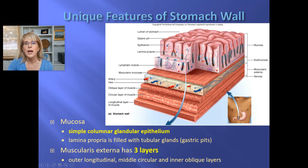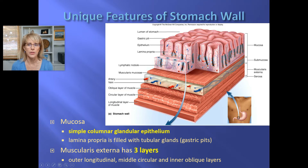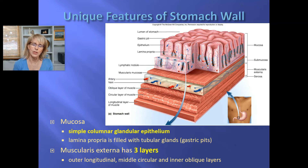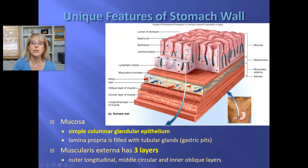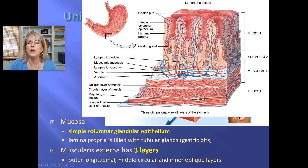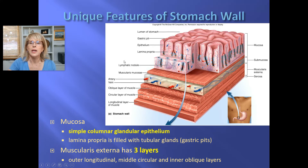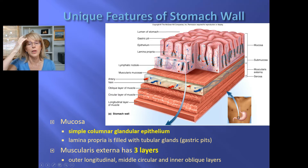It still has the muscularis mucosa, but look at how thick the mucosa of the wall of the stomach is. This might have given you some trouble in identifying it through the microscope, because on a microscope slide you just get a thin section of it, and that thin section can confuse you — you might think that looks like a villus. But there are no villi in the stomach.